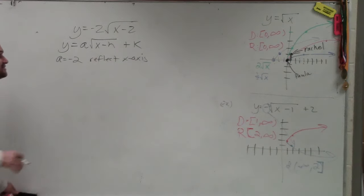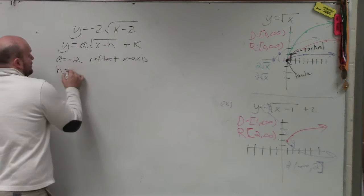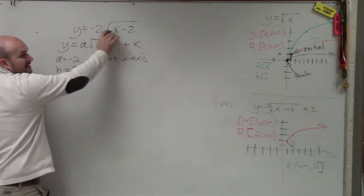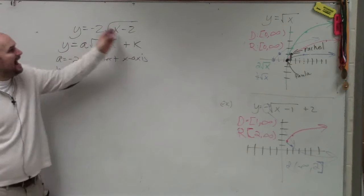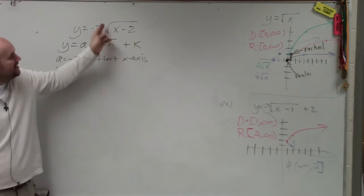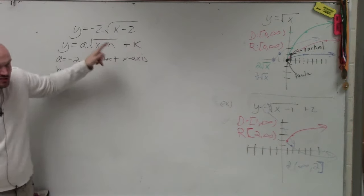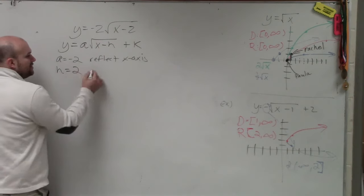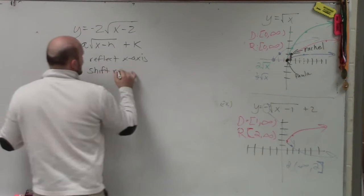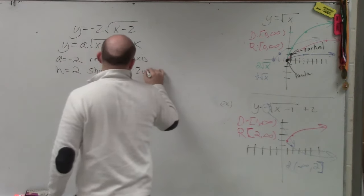Then we have the x minus 2. So your h is equal to 2. Because it's x minus h. x minus 2. So you're minusing h. h is 2. So since h is equal to 2, you're going to shift right 2 units.